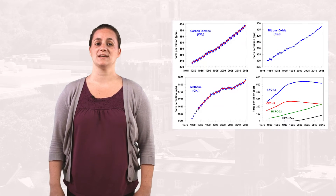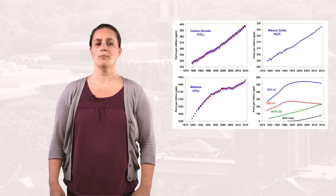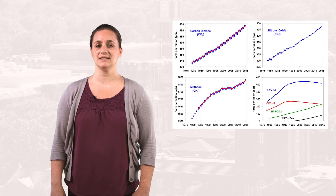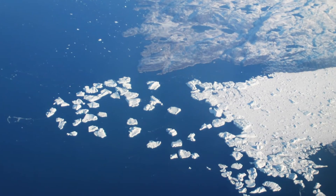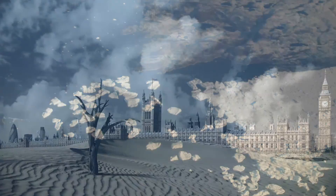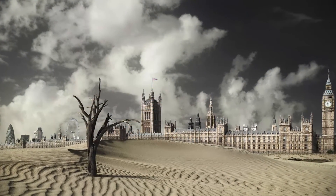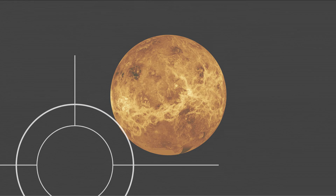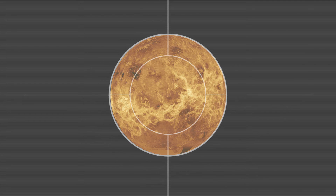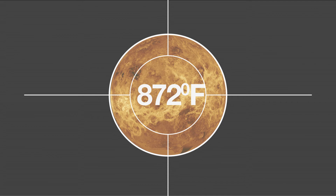We know from the Earth's energy balance that with more molecules of these gases absorbing longwave energy, the temperature of the Earth's surface and atmosphere must rise in response. Many scientists believe that Venus experienced what's called a runaway greenhouse effect, causing it to become the hottest planet in our solar system, with a surface temperature around 872 degrees Fahrenheit.